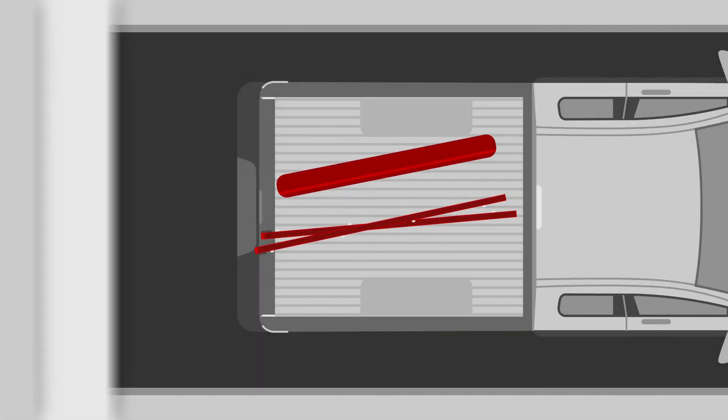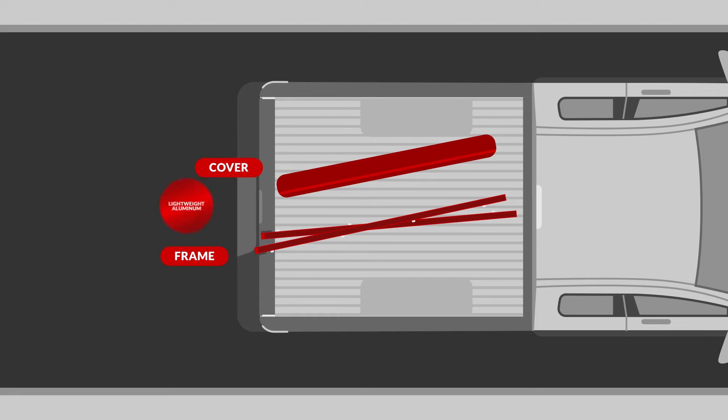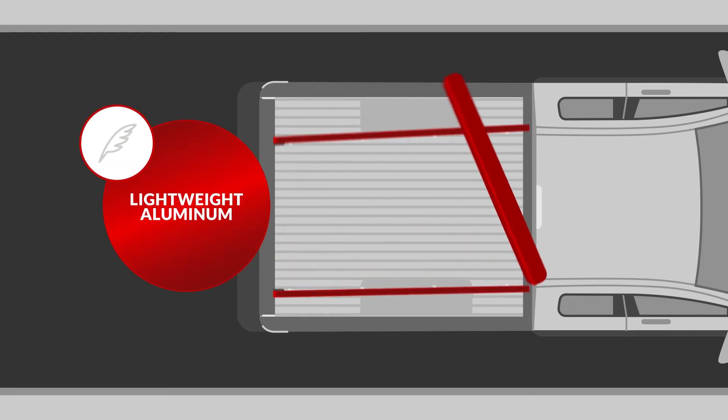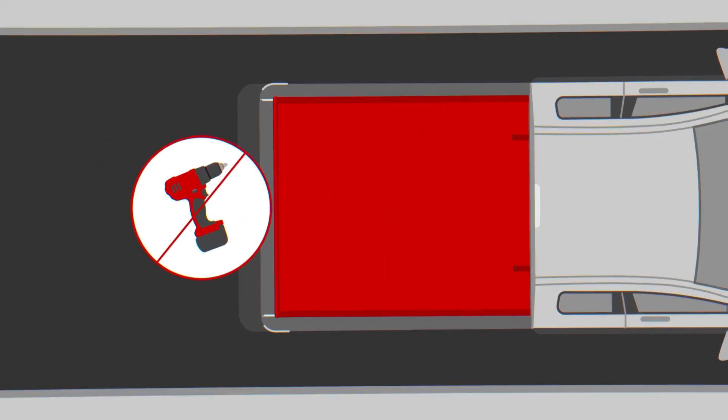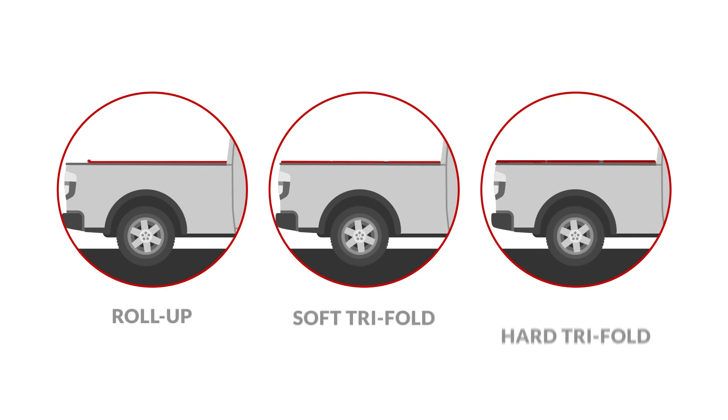Tonneaus are composed of two main parts, the frame and the cover. Most frames are made of lightweight aluminum rails and bows, and can be easily installed into your truck bed in just a few minutes with no drilling or damage. Covers come in a variety of styles.